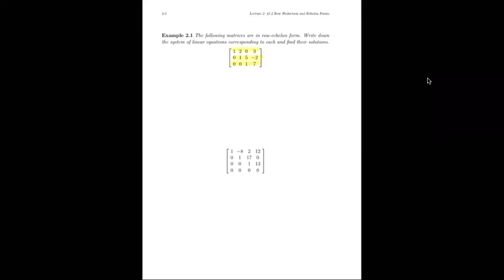This matrix is in row echelon form. We have a leading one in the first row, the next leading one is to the right of that one, and the next leading one is to the right of that. If we were to swap rows two and three, we'd be out of order — our leading ones would not be moving to the right as we descend the rows. There are no rows of zeros, so all qualifications are met.